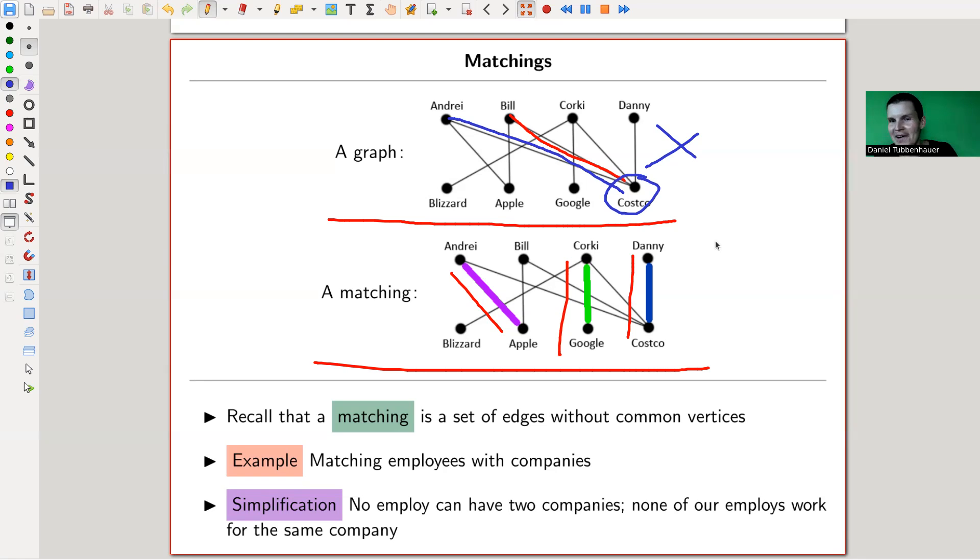And ignoring all kind of funny things like nobody works for two companies and no company has the same kind of person. And kind of this association would be a matching, right? So you can ask those questions in more general, see how you can match people at jobs or maybe dating or whatever. You can imagine many matching problems. Yeah.